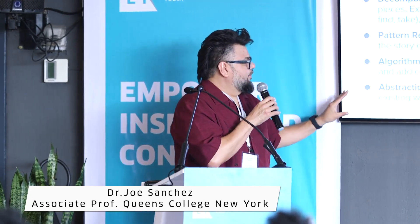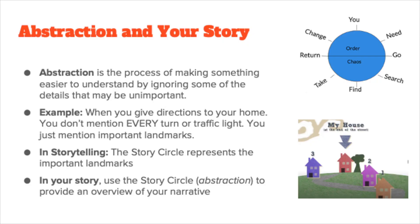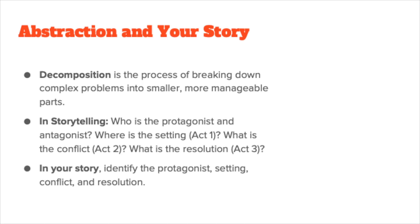Abstraction is the process of making something easier to understand while ignoring some pieces. For example, if a stranger asks for directions to your home, you don't give every single step — you cut it down to major landmarks: 'Go to the first traffic light, make a right, drive until you see a Kentucky Fried Chicken, make a left.' You're not saying there'll be 17 houses, a purple one, a blue one — you skip those because they're not important. You only need the main things. That's abstraction, and it's also decomposition — breaking it into smaller, manageable pieces.